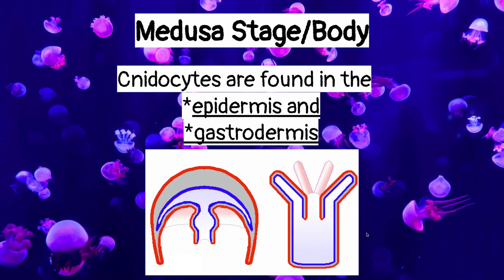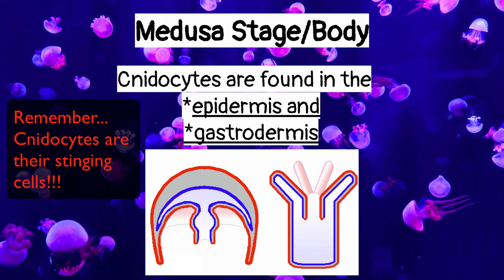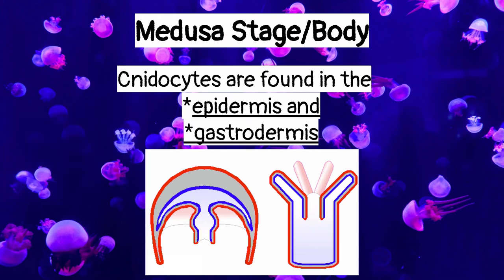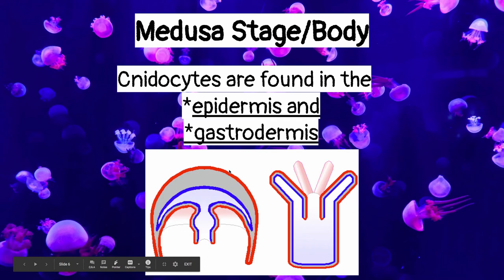Still with the medusa, the location of nematocysts will also help us identify the class. Scyphozoans have their nematocysts in both their epidermis — that outer layer of cells surrounding the body — and their gastrodermis, the cells lining the gastrovascular cavity. Some species have nematocysts only in their tentacles, while others have them on their bell as well; it varies by species.